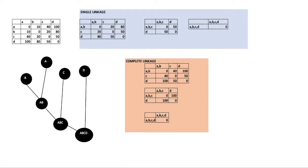First we're going to start with single linkage. The first step is finding the nearest closest pair. We can assume the distance from A to B is 10, A to C is 40, and so on. The nearest closest pair in this scenario is A to B, which is 10. So we're going to merge A and B. After we merge them, we need to find the minimum distance, because single linkage finds the minimum distance between each pair of clusters.